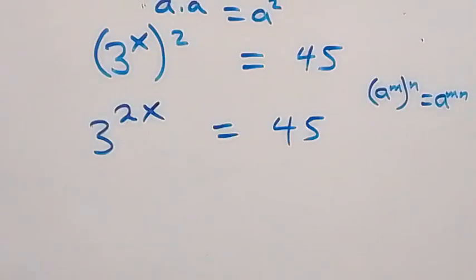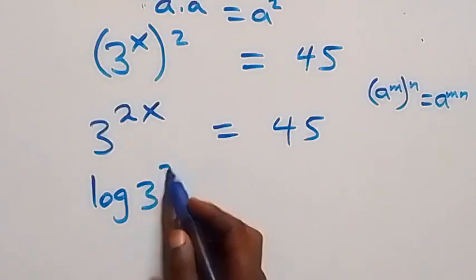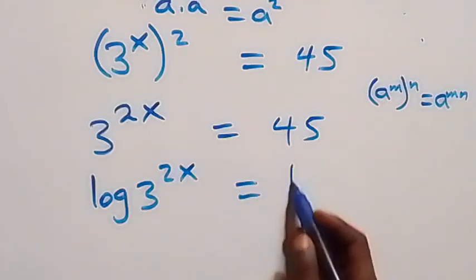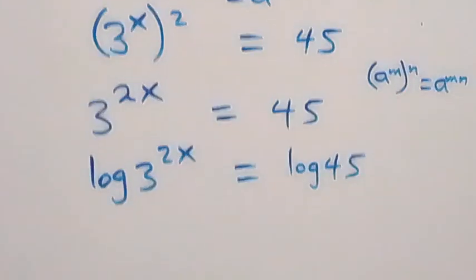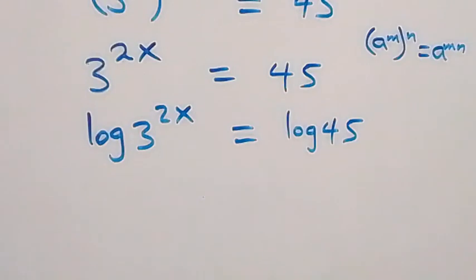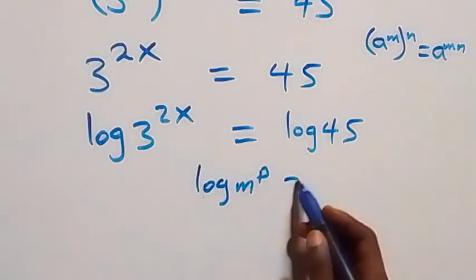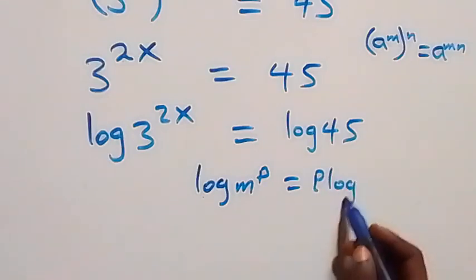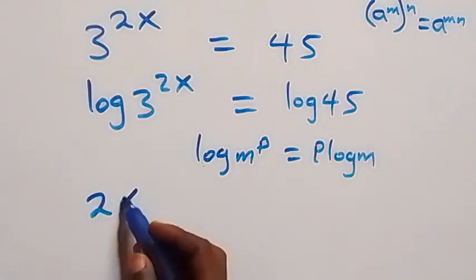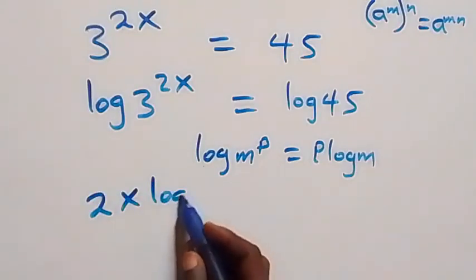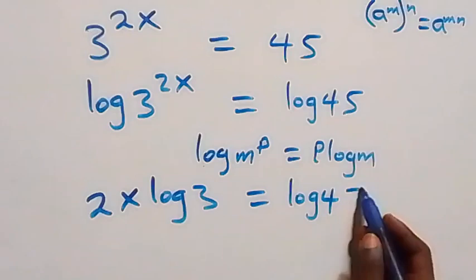Our next step is to take the log on both sides. That is, we have log of 3 raised to power 2x equals log 45. Applying the power rule of logarithms — where log m raised to power p equals p log m — what we have becomes 2x log 3 equals log 45.